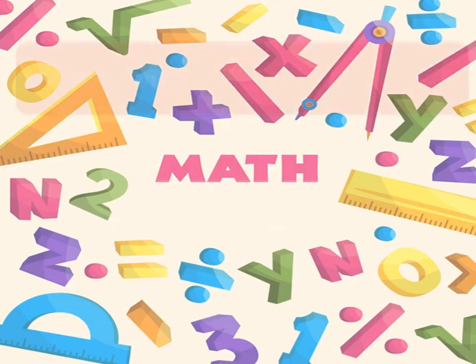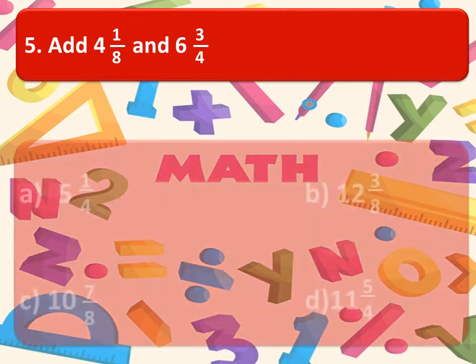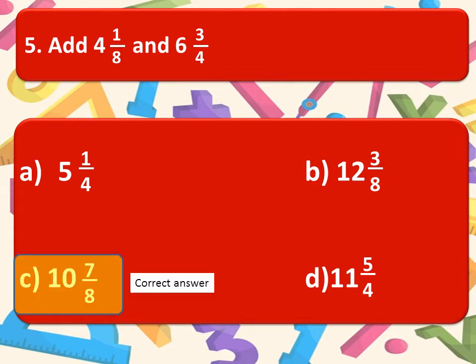And the next one is add 4, 1 by 8 and 6, 3 by 4. Here are the options. Think about the correct option. And the correct option is option C, 10, 7 by 8.